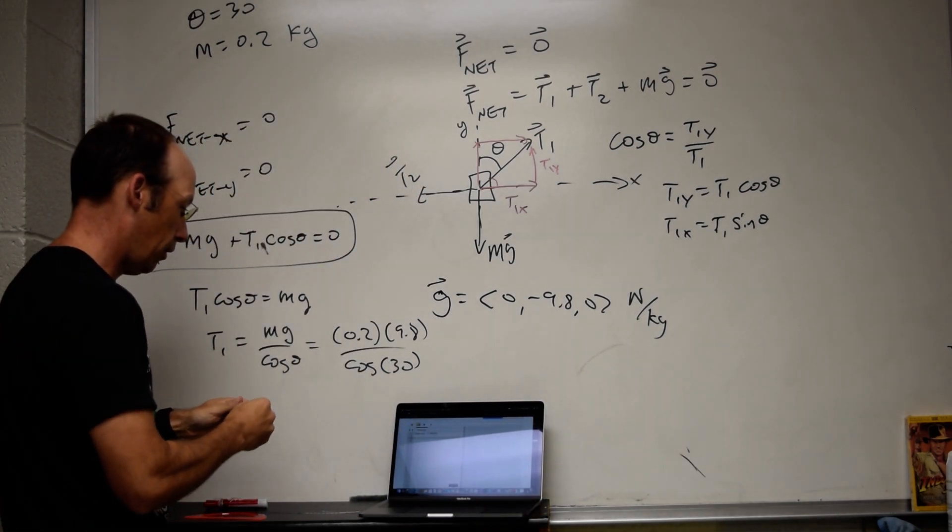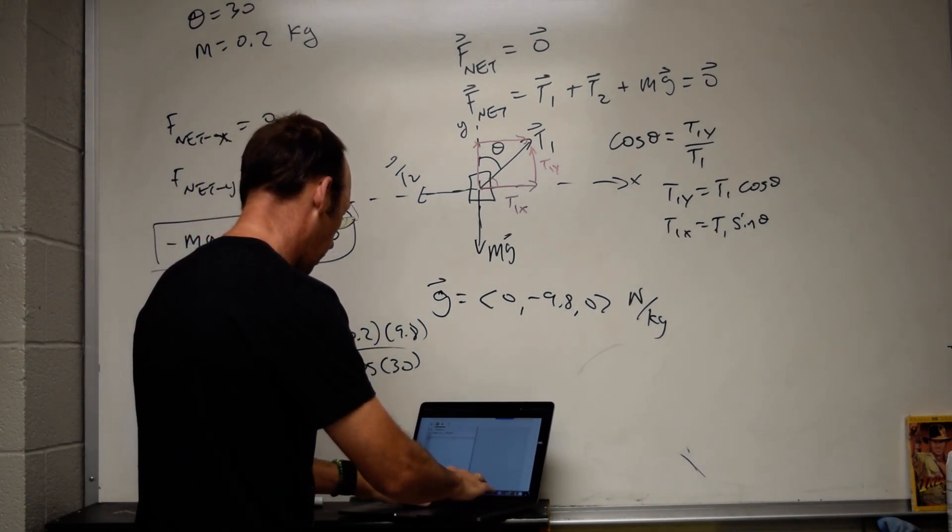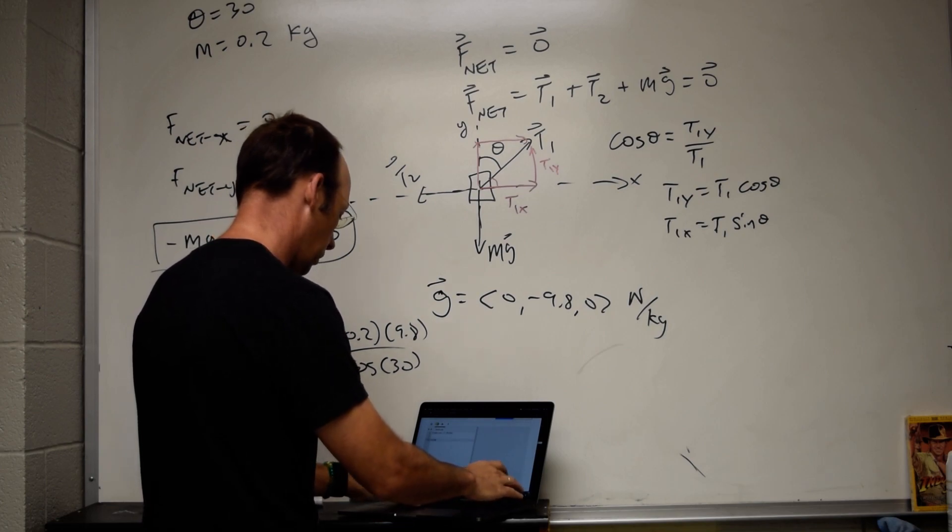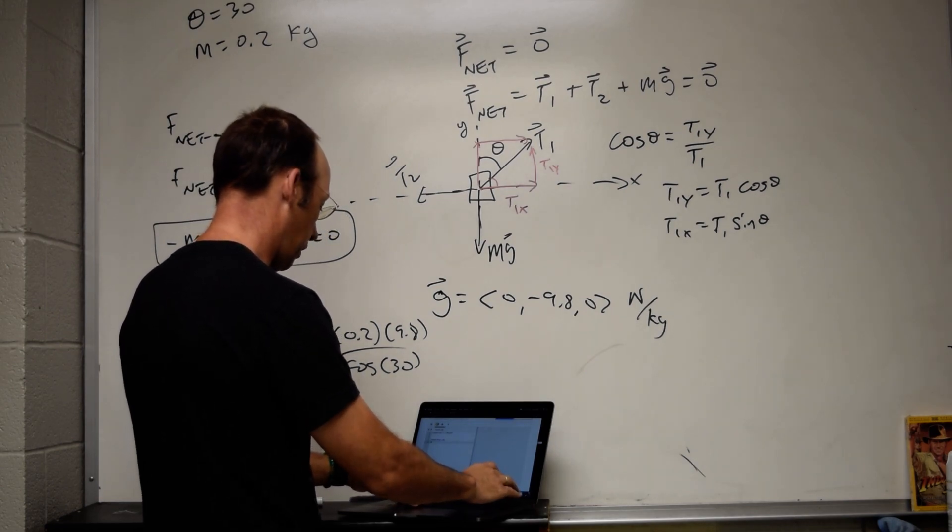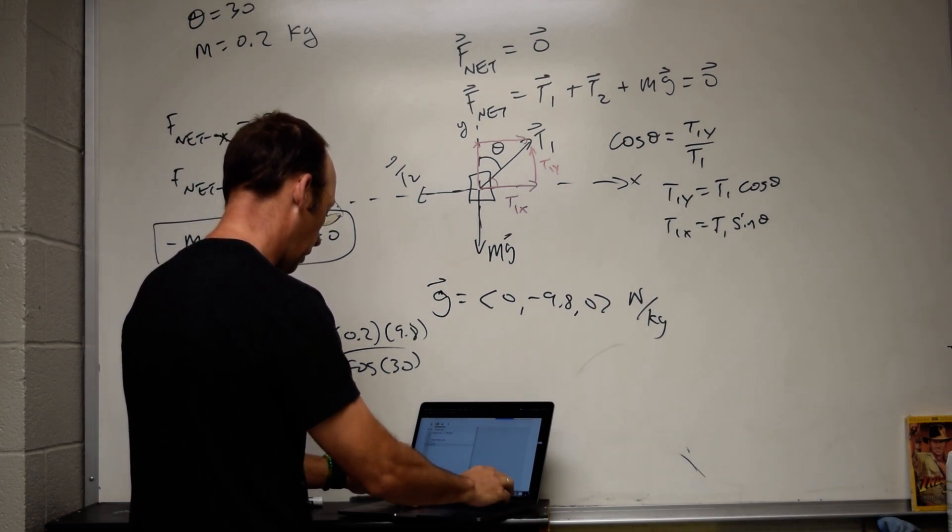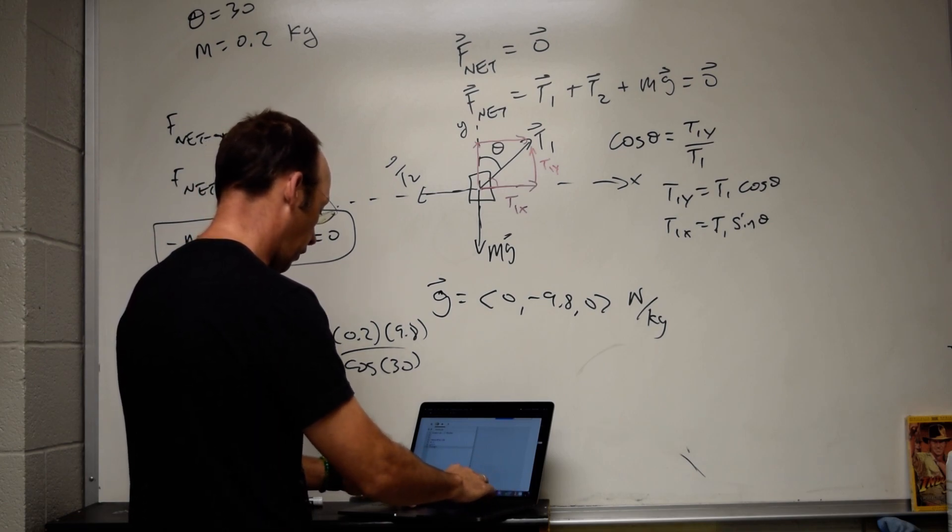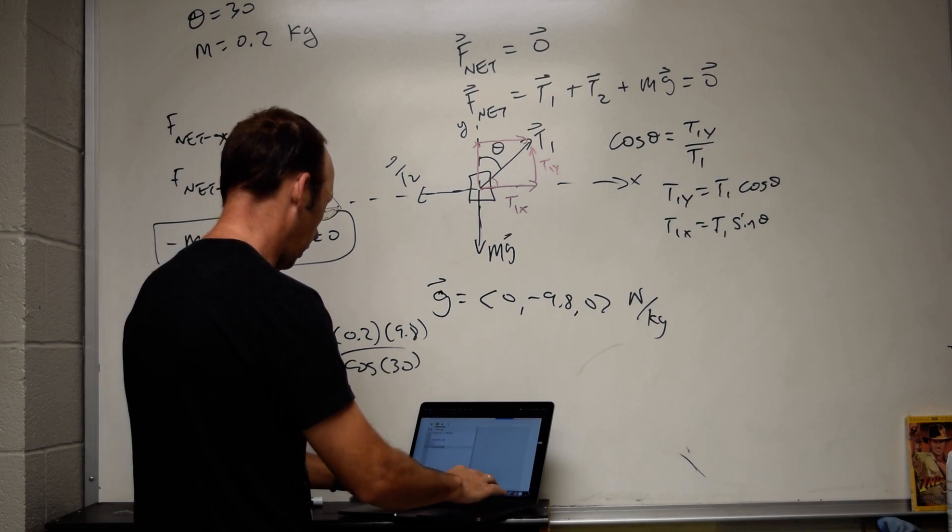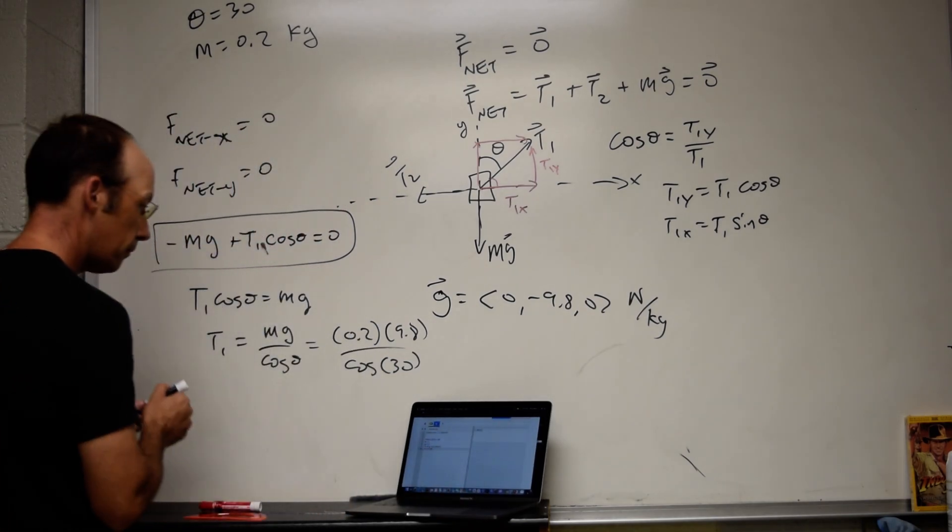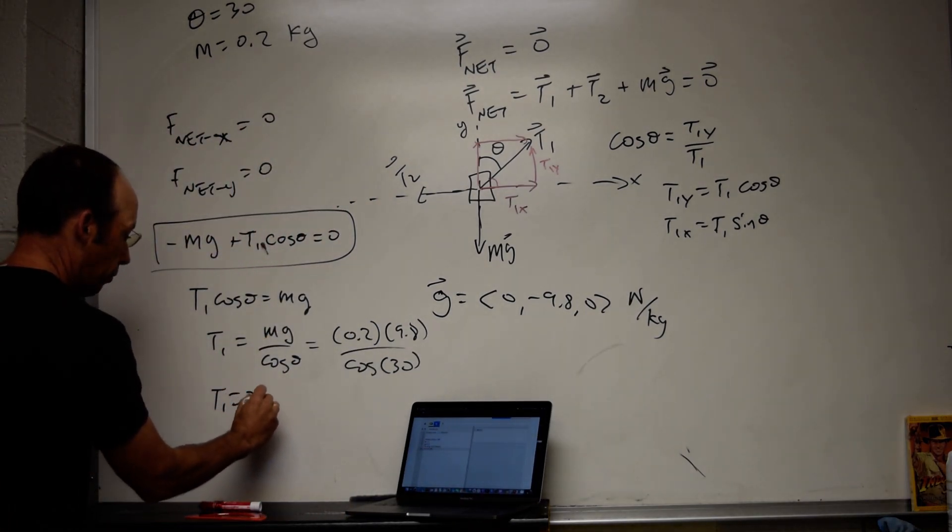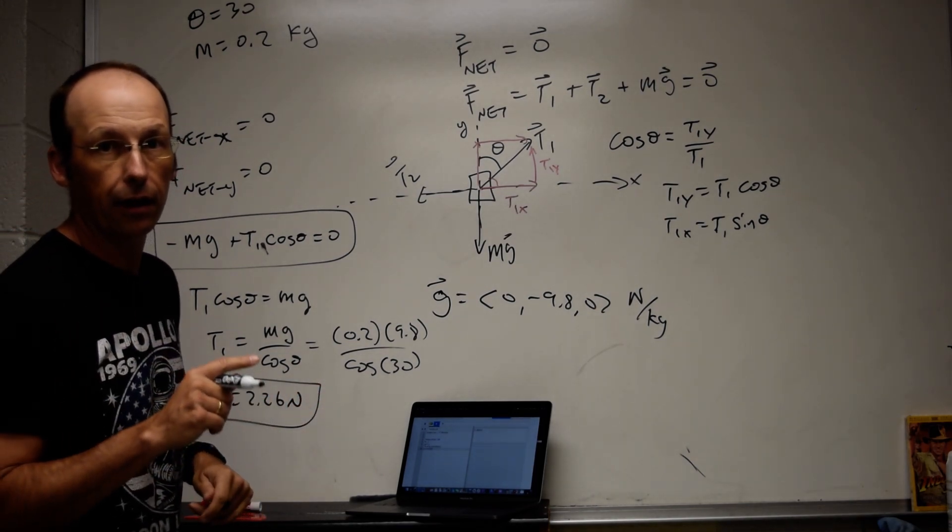And I'm going to use my calculator right here. So I have theta is 30 degrees. So 30 times pi divided by 180. m equals 0.2. g equals 9.8. T1 is equal to m times g divided by cosine theta. I get T1 is 2.26 newtons. That's the magnitude of T1. I'm going to write it as a vector in a little bit.